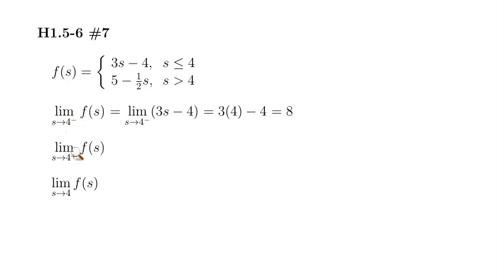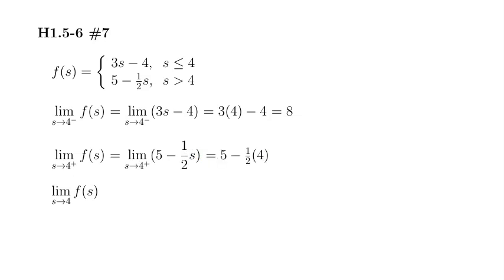Let's look at the right-hand limit. Since S is approaching 4 from the right-hand side, you can think of S as something bigger than 4. If that's the case, we have to use the bottom formula. So we're going to replace F of S by 5 minus 1 half S. Then S is approaching 4, so we plug in 4 in there. We're going to get 5 minus 1 half times 4.